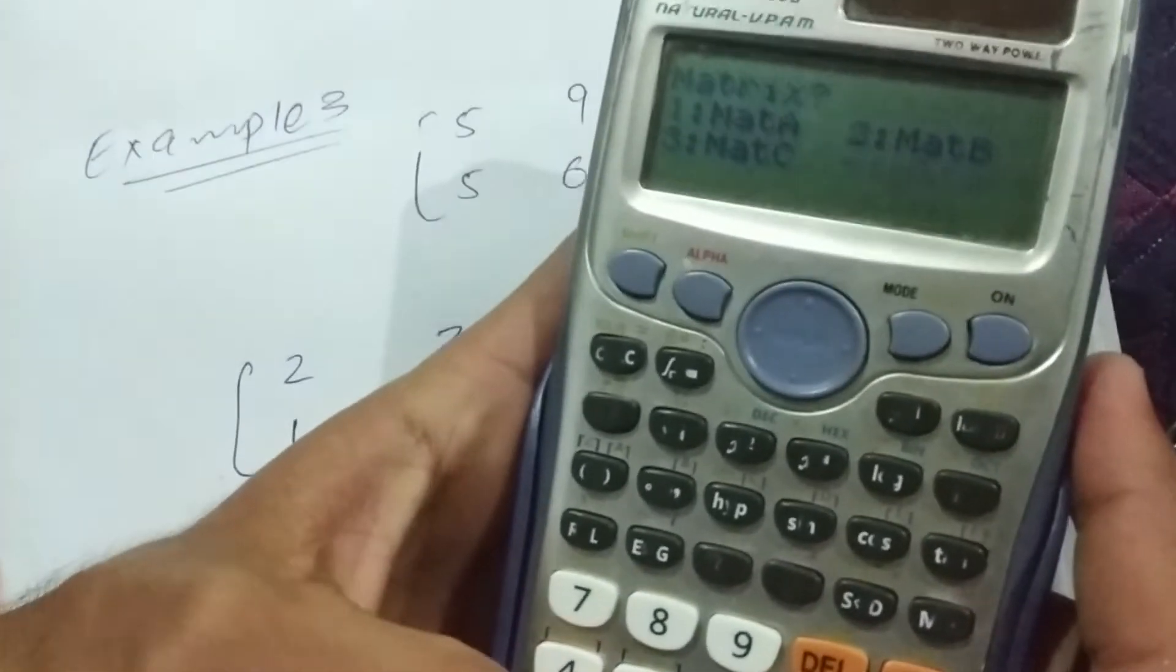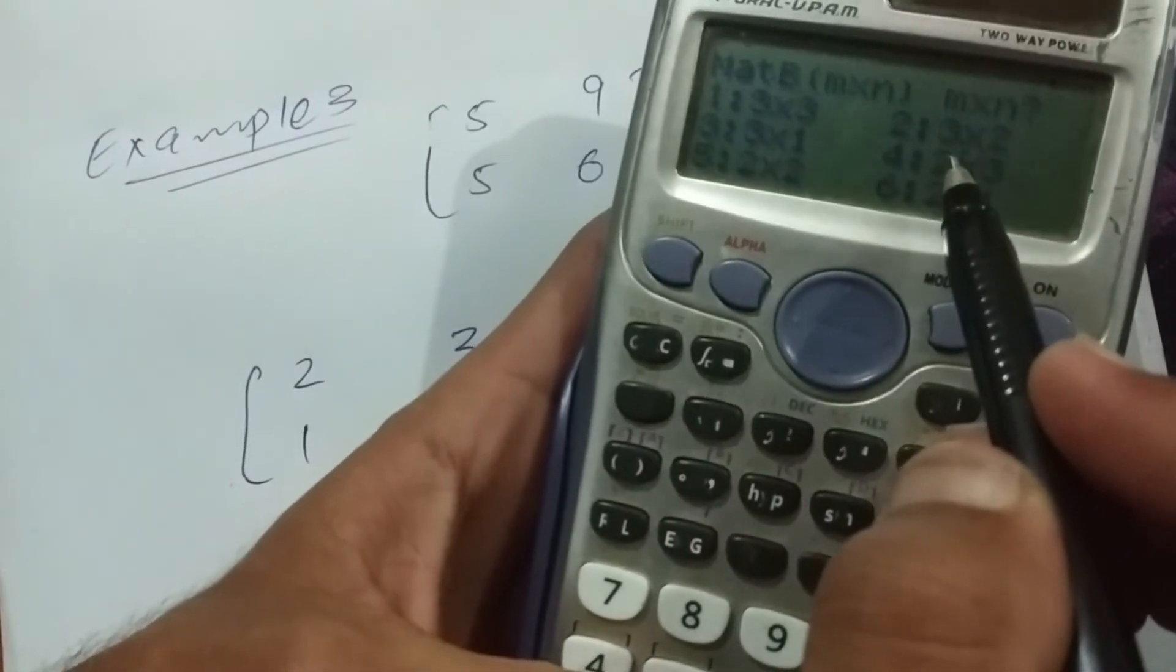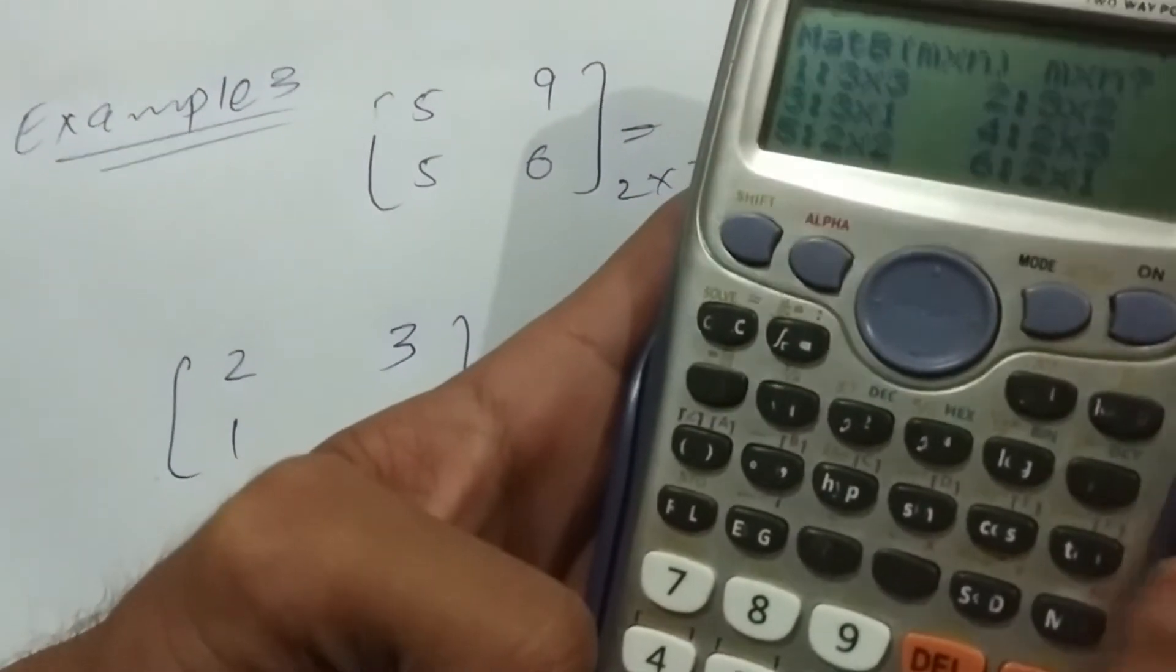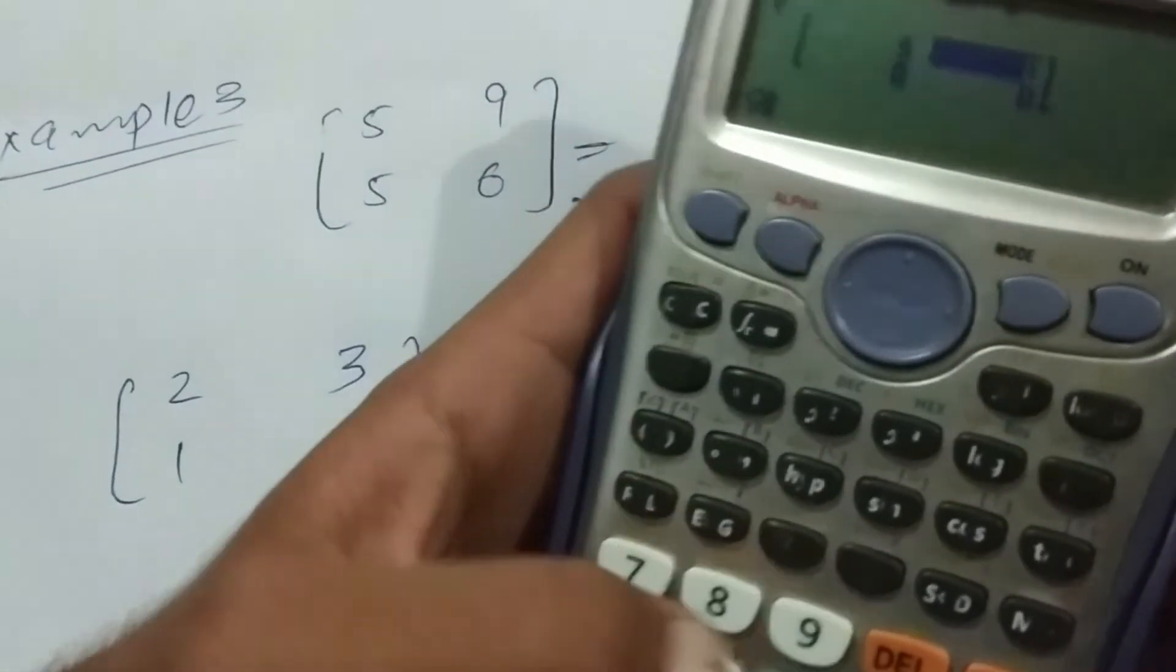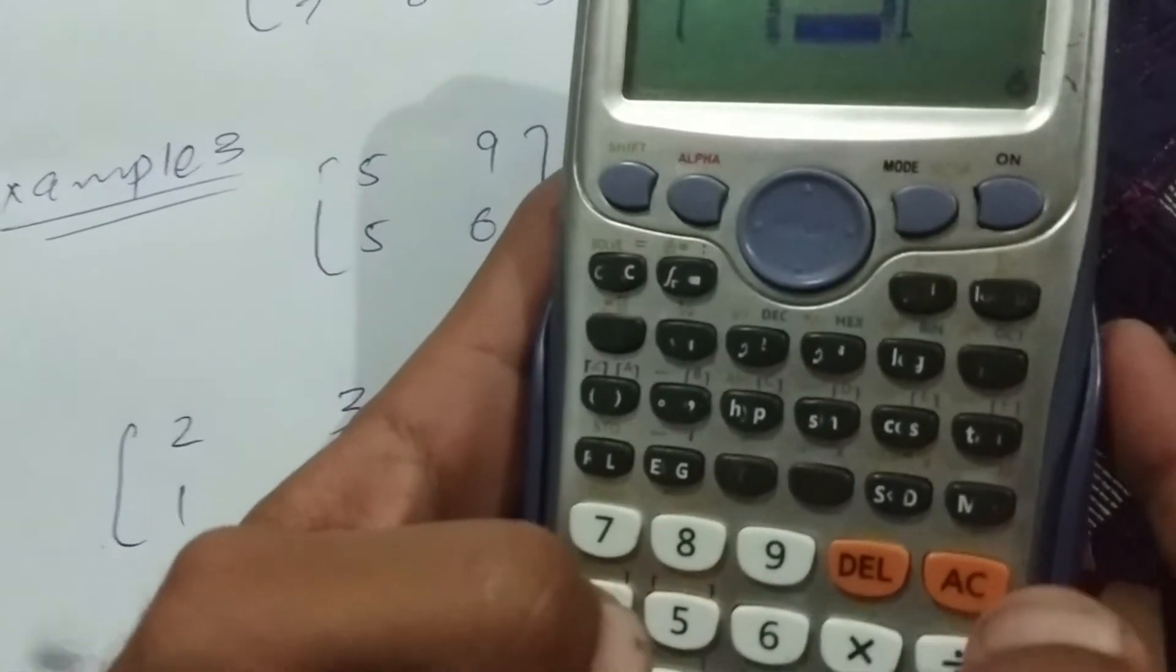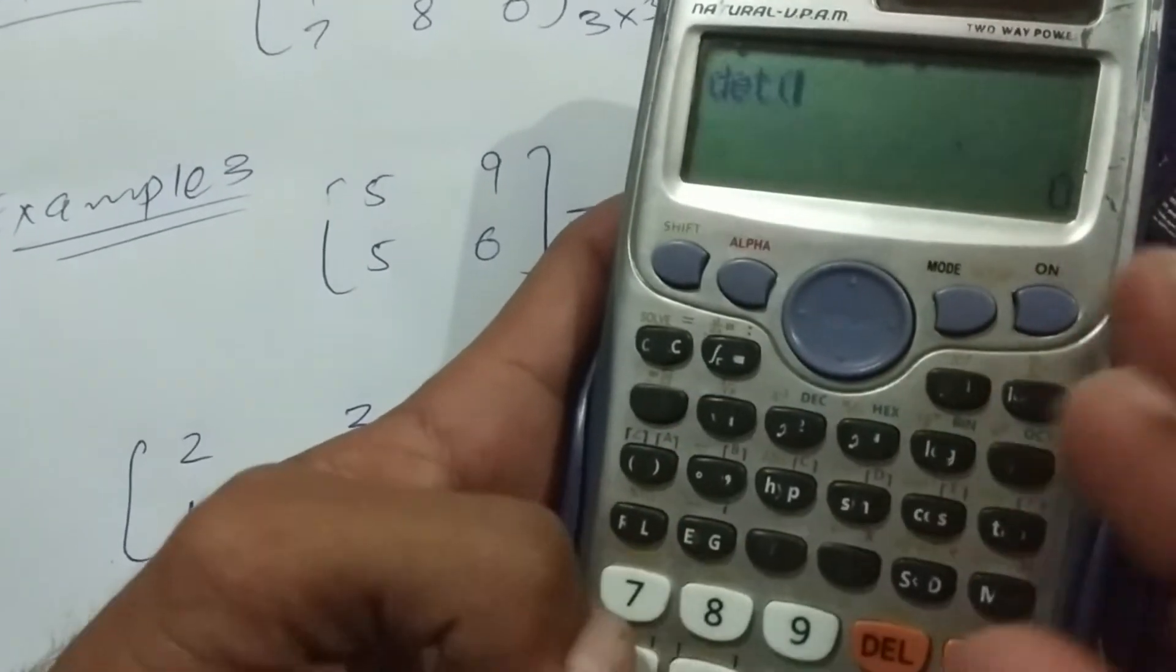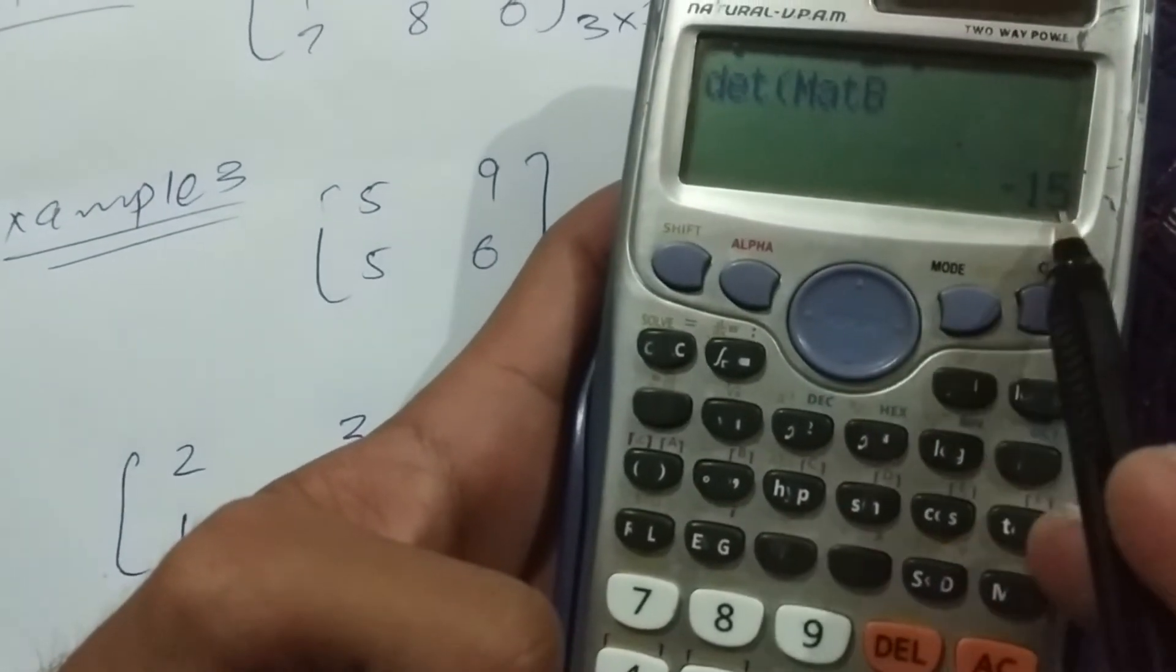Shift, 4, dim. This matrix is two by two. Here is 5. Now 5, 9, 5, then equal to, and 6 equal to. Press AC button. Quickly press shift, 4, mat, sorry determinant, determinant. Then press shift, 4, mat B, and minus 15.